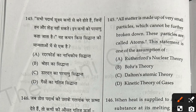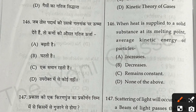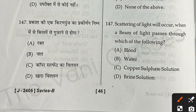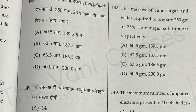Question 145: All matter is made up of very small particles which cannot be further broken down; these particles are called atoms. This statement is one of the assumptions of Dalton's atomic theory — option C. Question 146: When heat is applied to a solid substance at its melting point, the average kinetic energy of particles remains constant — option C. Question 147: Scattering of light will occur when a beam of light passes through blood — option A.